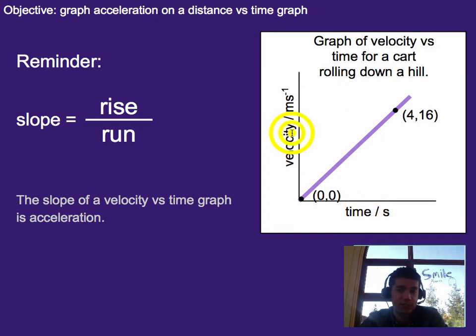So in this case, it tells you how fast your velocity is changing compared to time. And so that gave you the acceleration for this cart rolling down a hill.